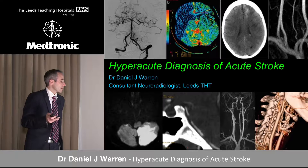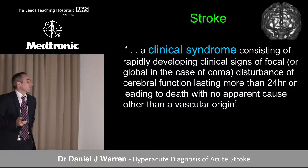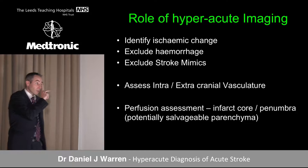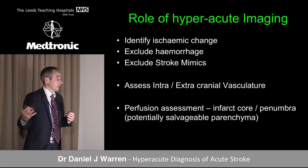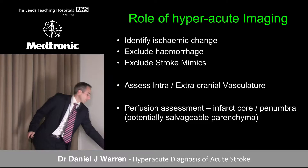The imaging in the diagnosis of acute stroke. I'm one of the diagnostic radiology colleagues at Leeds. As you know, stroke is the clinical syndrome, so the radiology is an adjunct to the clinical picture. The role of hyperacute imaging is really to identify ischemic change to support the clinical diagnosis, to exclude MIMECs, and also to exclude hemorrhage, which may have a bearing on ongoing management.